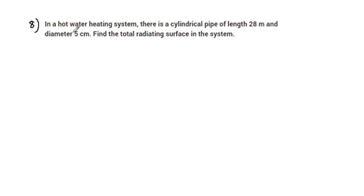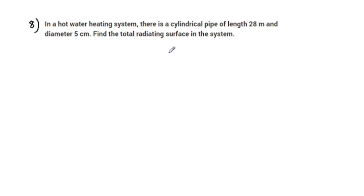In a hot water heating system, there is a cylindrical pipe of length 28 meters and diameter 5 cm. Find the total radiating surface in the system. The total radiating surface is the curved surface area of the cylindrical pipe.